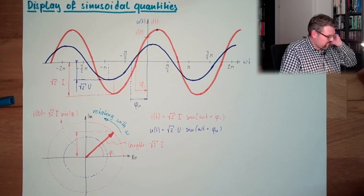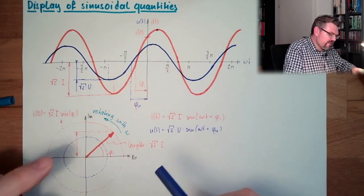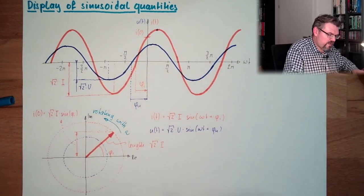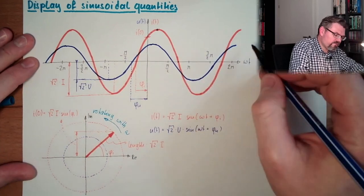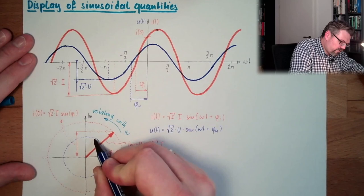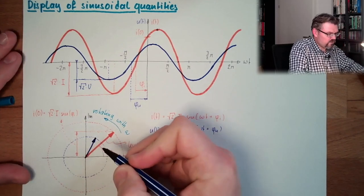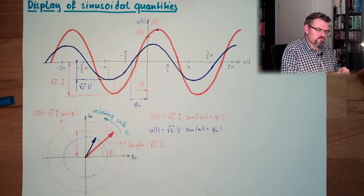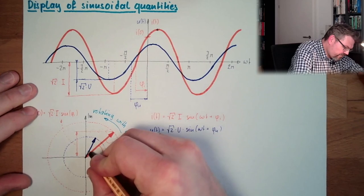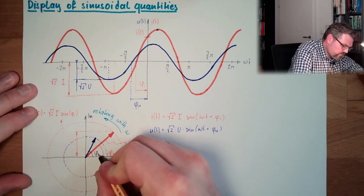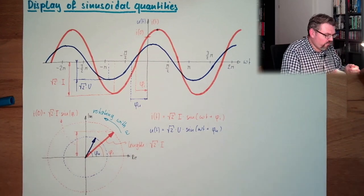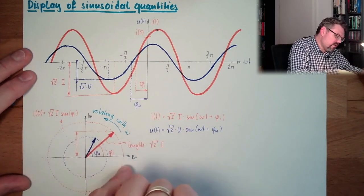And why is this easier? Let's have a look. What is the arrow of this? It's shorter. And it's a little bit further. So this is u. This is my arrow of u. Different length. Here I have a different angle. It's phi u. It's a bigger angle. And if both arrows are moving with the same velocity, because this omega is equal, then they will stay put, but rotating with each other.